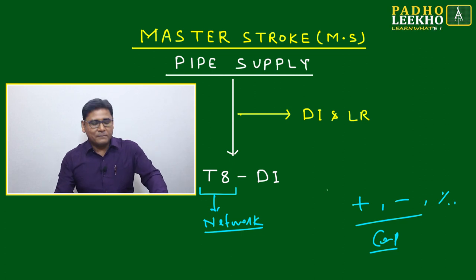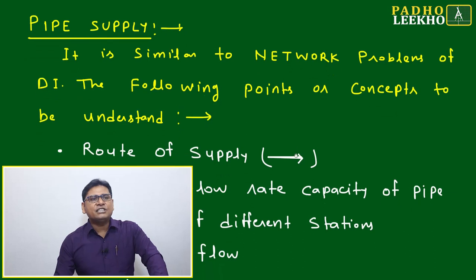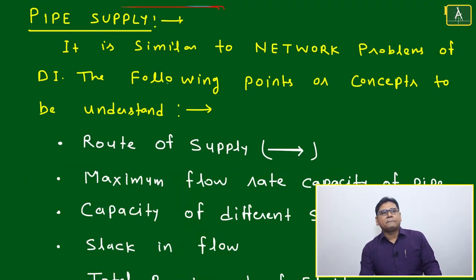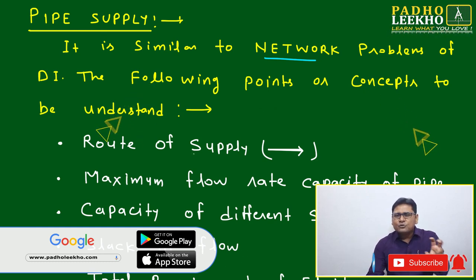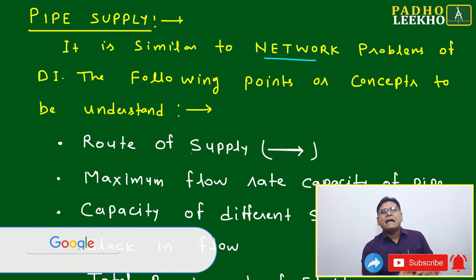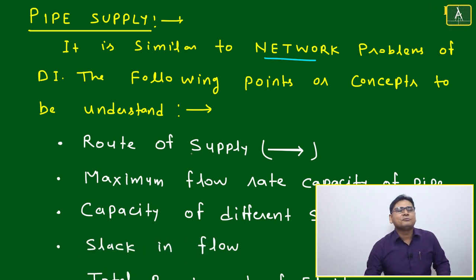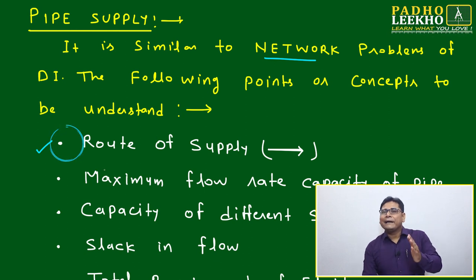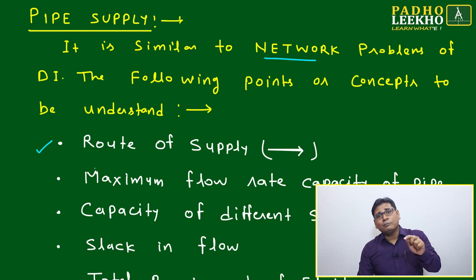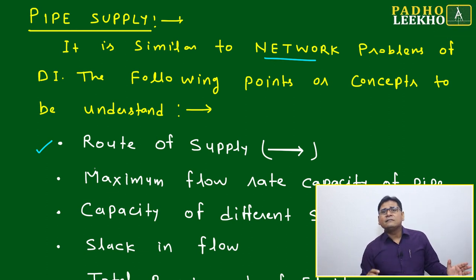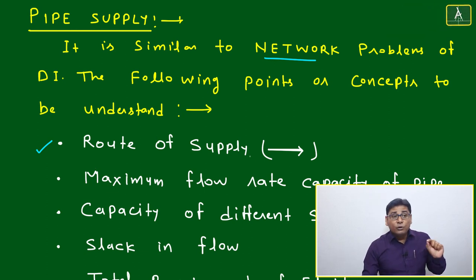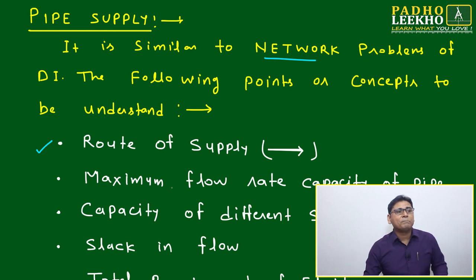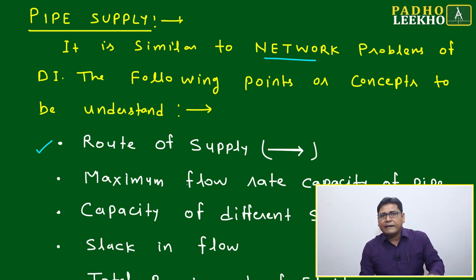Without going too deep into theory, let's understand what pipe supply is and what factors affect it. It is similar to a network problem in DI. The following points must be kept in mind when looking at any DI caselet based on pipe supply. First: the route of supply — which direction the fluid flows, left to right or top to bottom. One side is the inlet, another is the outlet, and there may be several server stations in between.